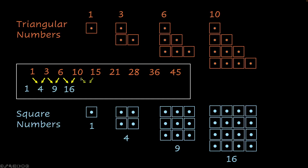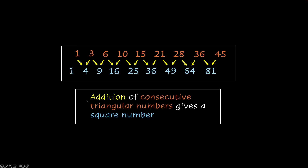We can keep going with this pattern. Next would be 10 plus 15, which is 25 — a 5 by 5 square. Next is 15 plus 21 equals 36; then 21 plus 28 equals 49; then 28 plus 36 equals 64; and 36 plus 45 equals 81. You can keep going and going. So what we found is that the addition of consecutive triangular numbers gives a square number. If you write all the triangular numbers in order and pick any two consecutive ones and add them, you will always end up with a square number. And that is our key insight. That was about patterns of square numbers — see you in the next video.